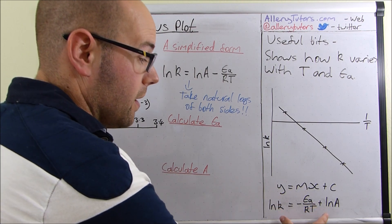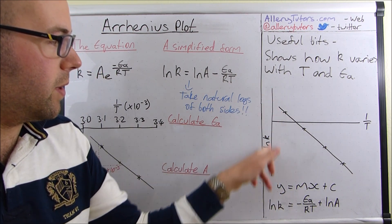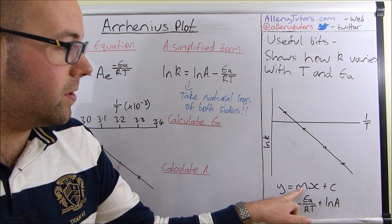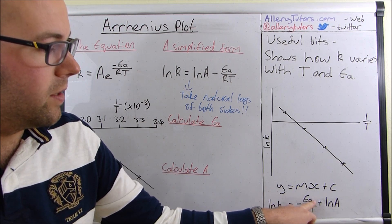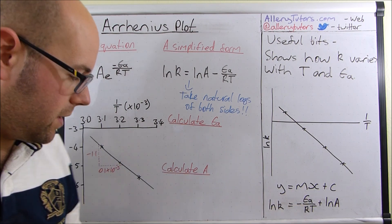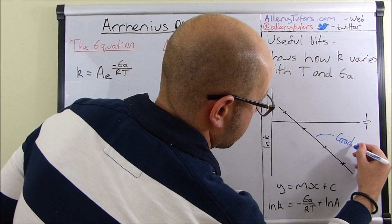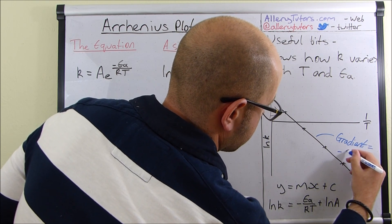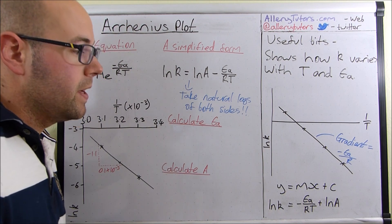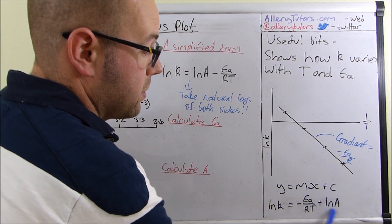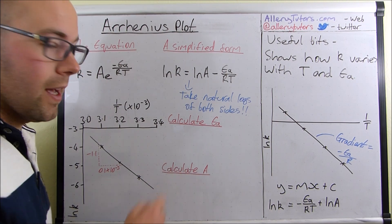So we're going to link this in with the simplified version of the equation. You can see y is lnk on the y-axis, the m bit is the gradient — and since x is 1 over T, the gradient m must be minus EA over R. That's really important because we're going to use that quite a bit later on. The intercept is plus lnA, and we'll calculate that a little bit later as well.